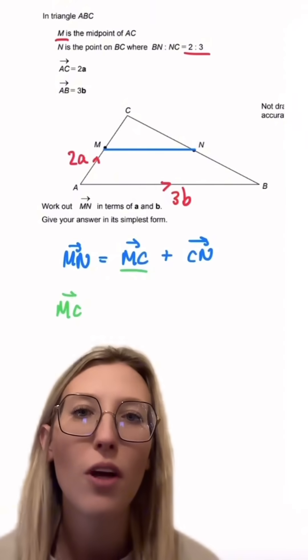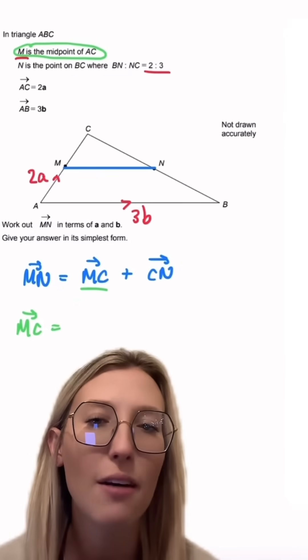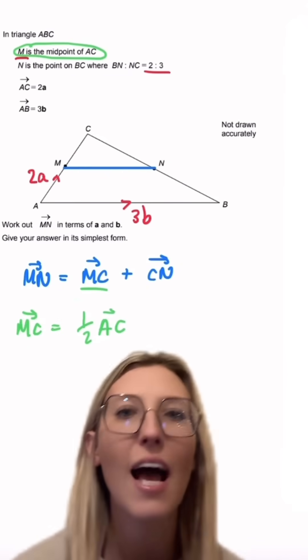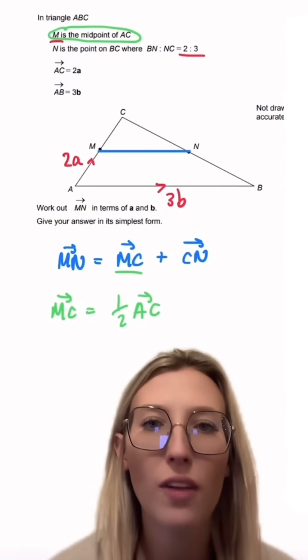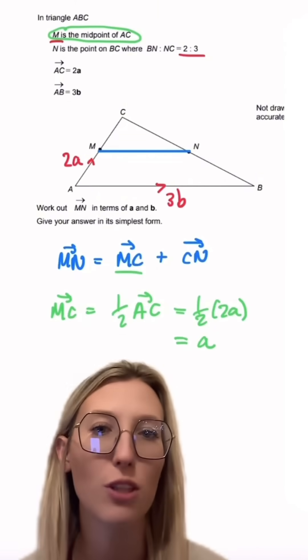So M to C, we know that M is the midpoint of the line AC. So we know MC must simply be one half AC. Now we've got that AC we know is 2a. We've got one half times by 2a which just leaves us with a.